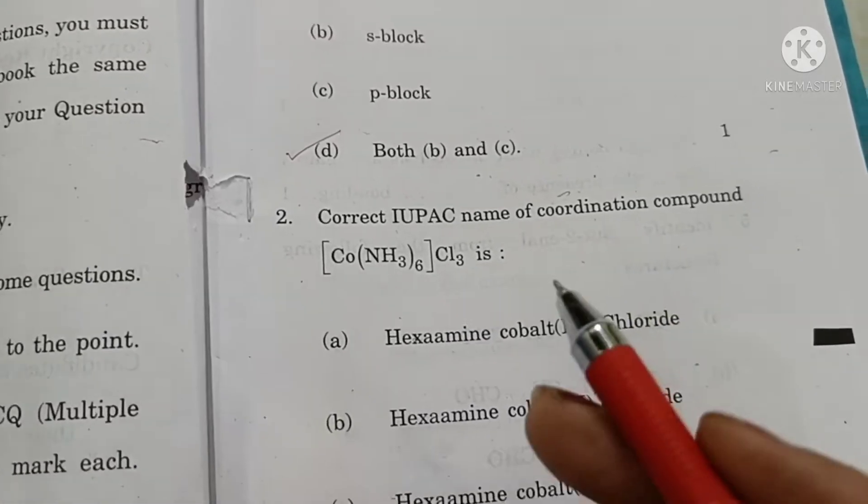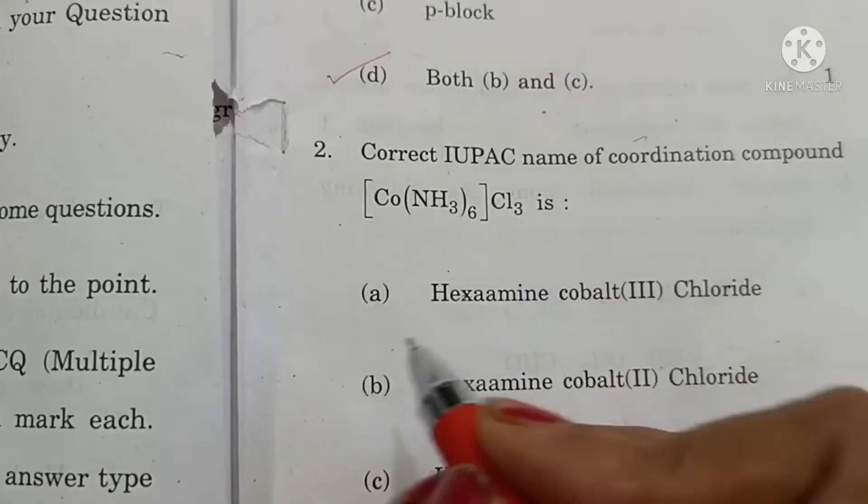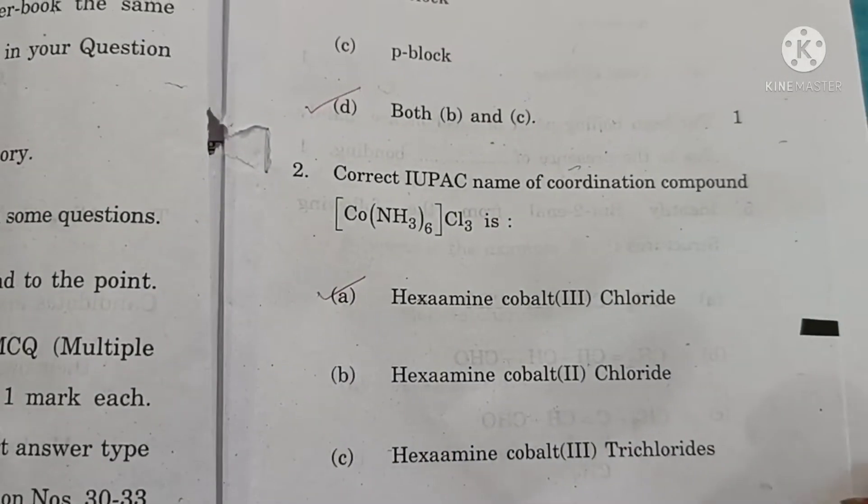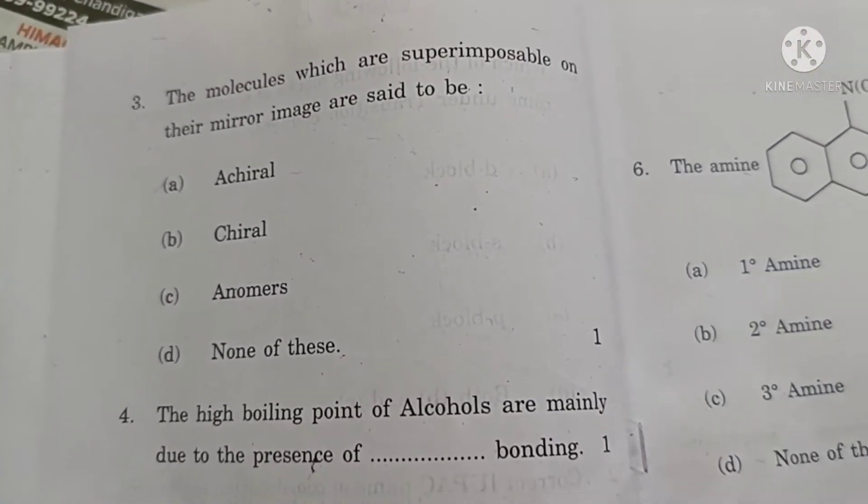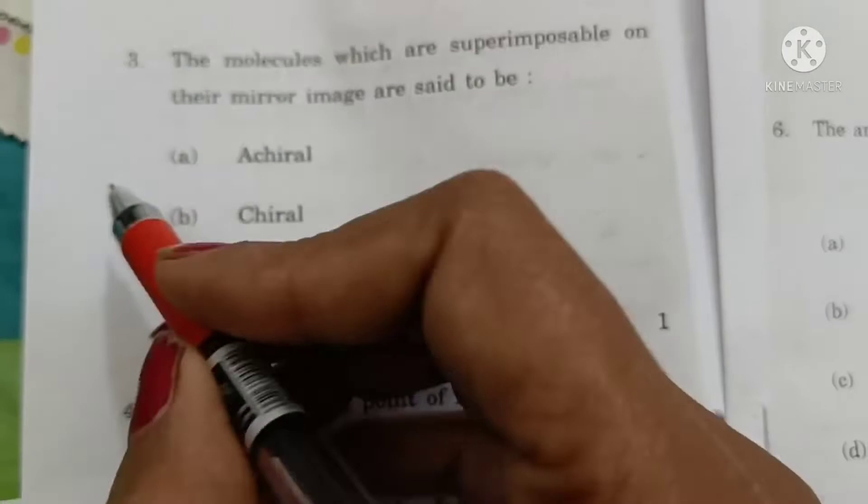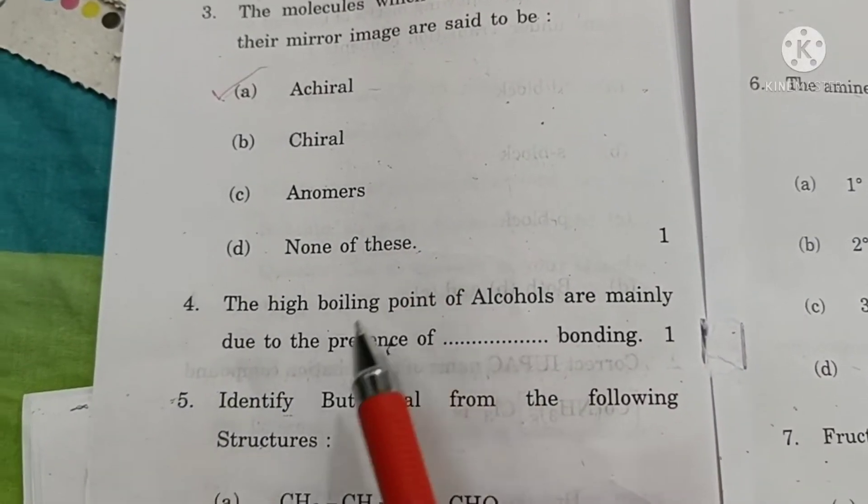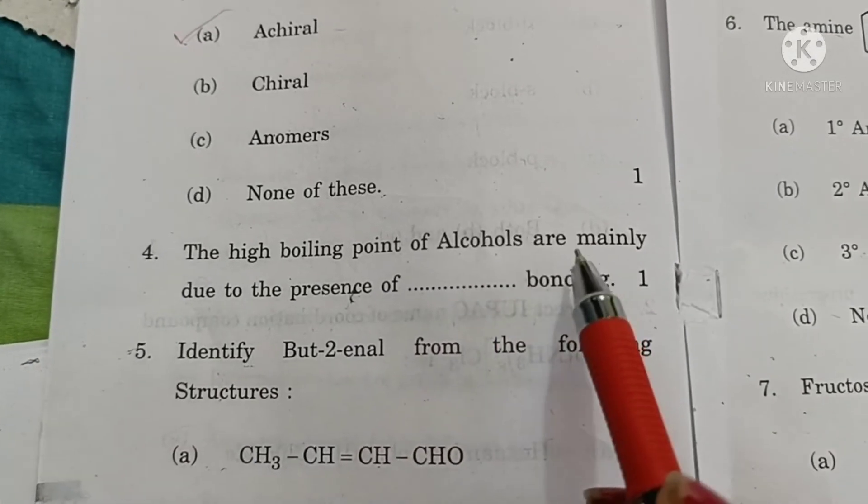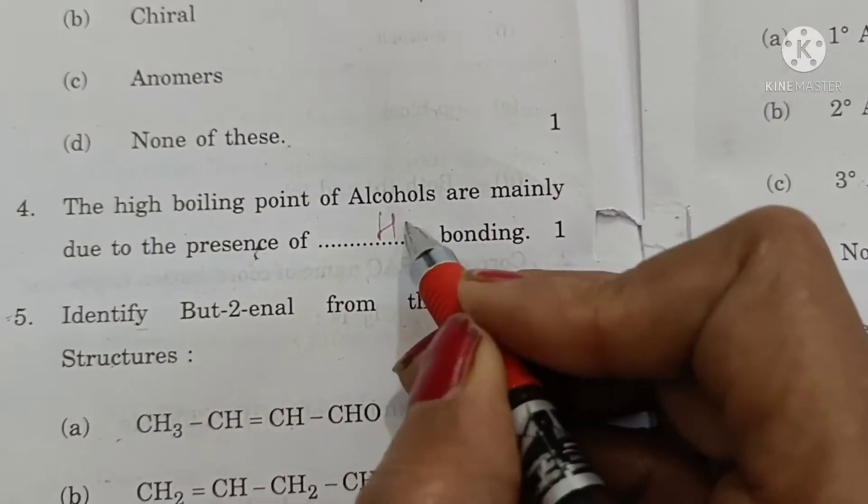Correct IUPAC name of coordination compound is hexamine cobalt-3 chloride. Option A is the correct answer. The molecules which are superimposable on their mirror images are said to be achiral. If they are non-superimposable they are called chiral. The high boiling point of alcohols are mainly due to presence of hydrogen bonding.